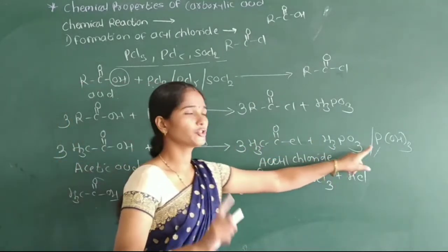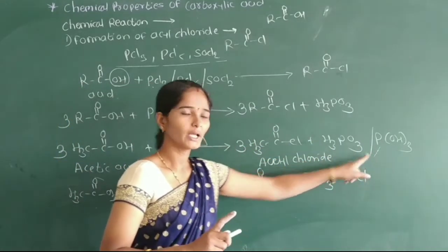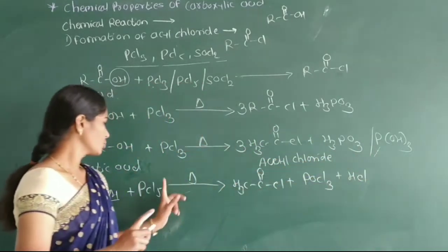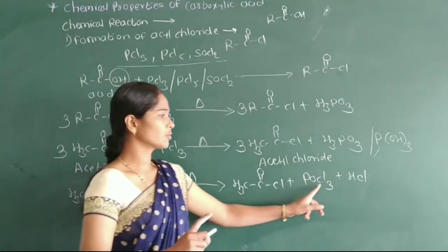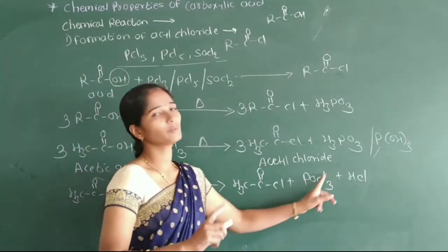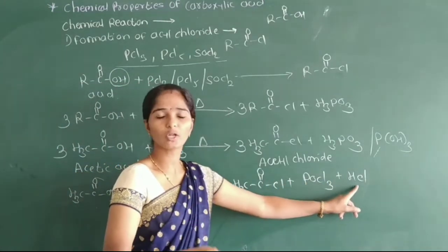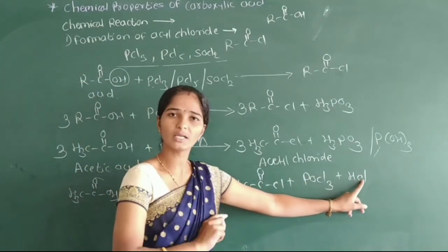In the reaction with PCl5, the byproducts formed are H3PO4, phosphorus oxychloride (POCl3), and HCl.